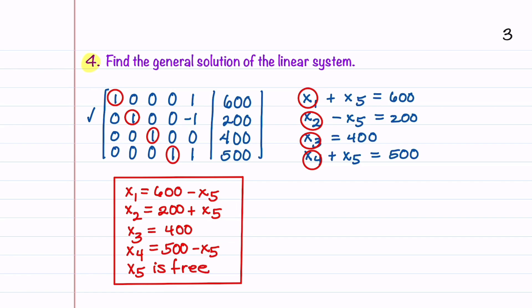Values can then be substituted in for X5 to analyze the traffic at all four intersections.